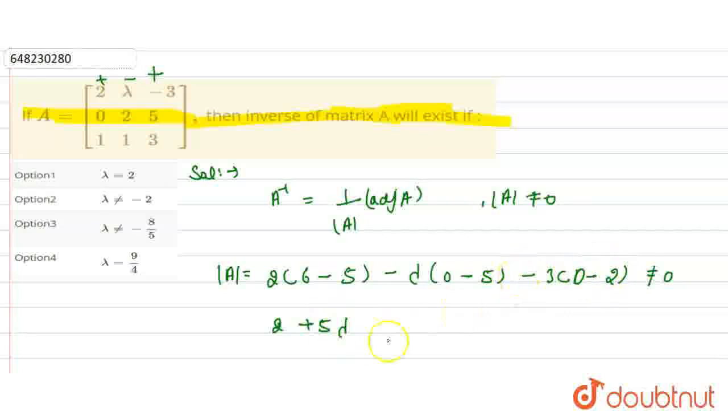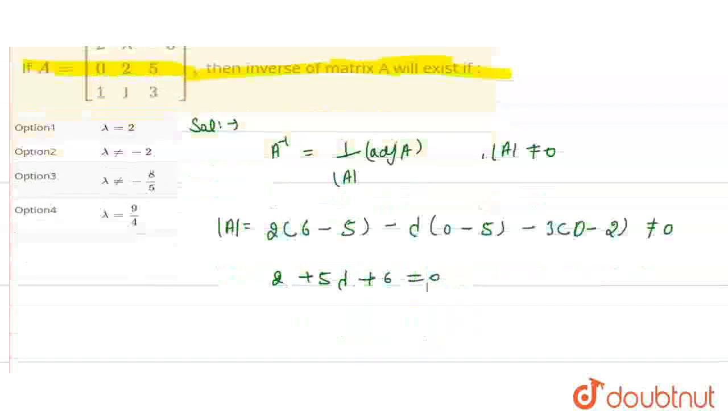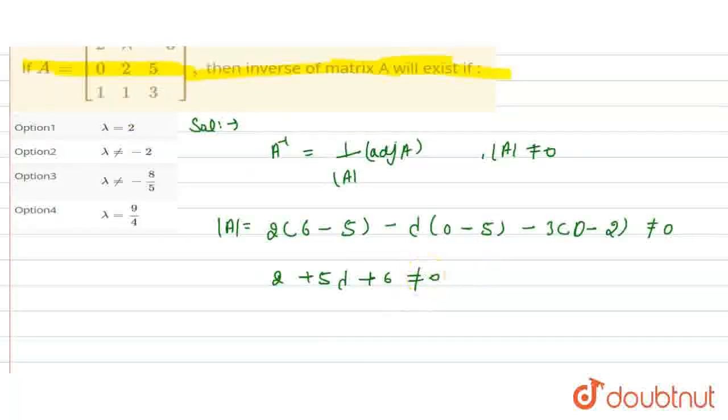Here I have minus 2, I will multiply minus 3. So this will be plus 6. And the whole term is not equal to 0. It means we have 5 lambda plus 8 not equal to 0.